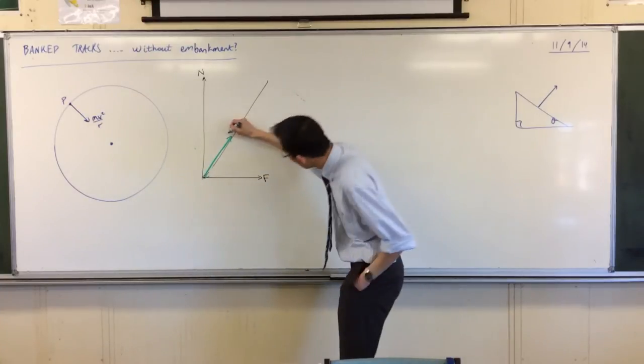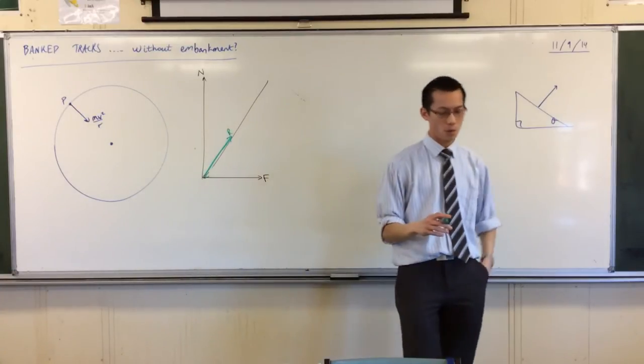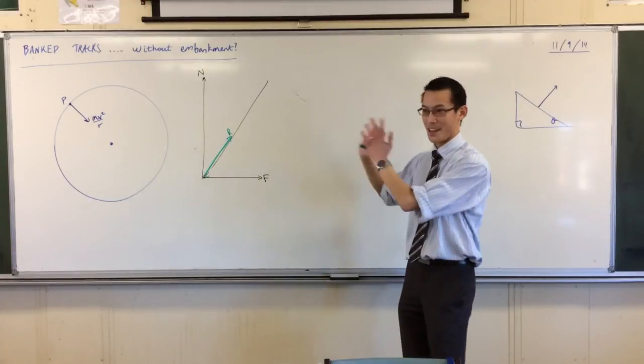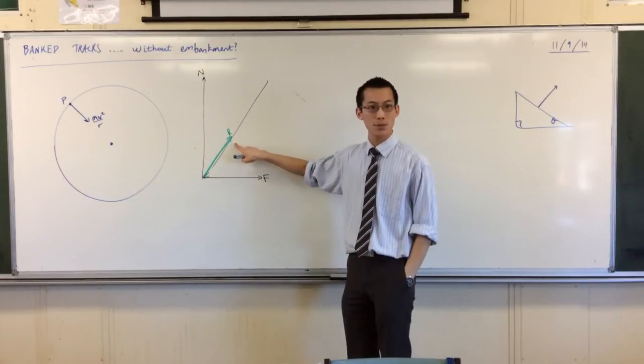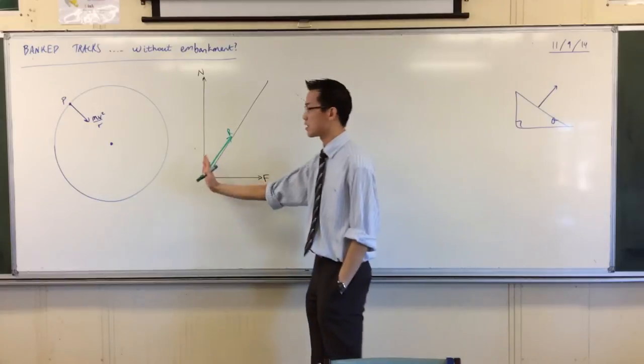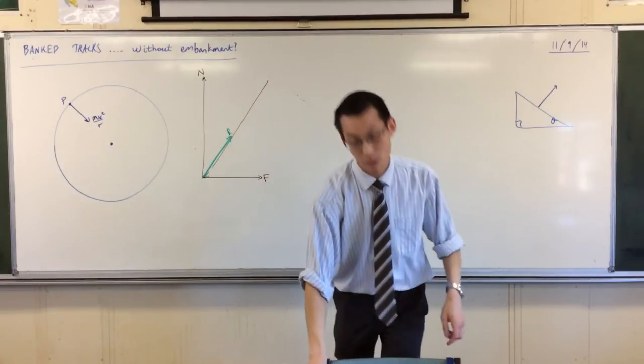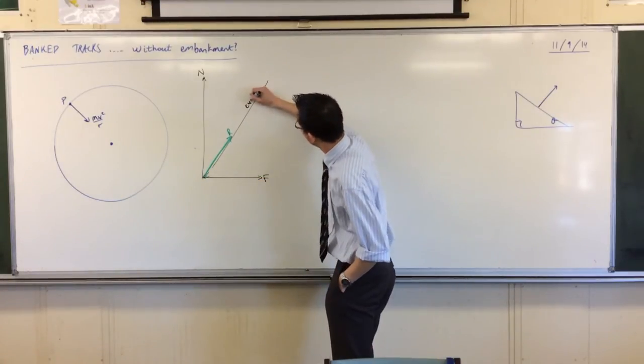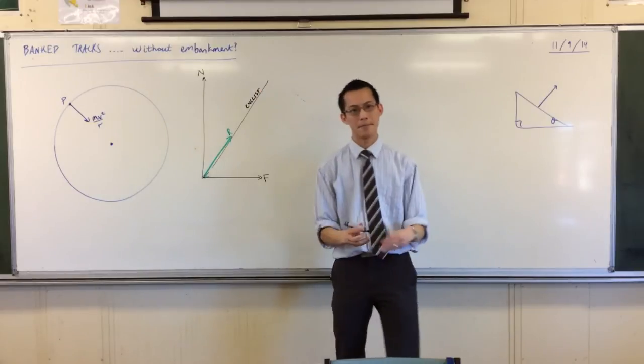Because if it's not, for instance, suppose he banked so far over that the resultant force was not this way, but say over this way. What would happen to the cyclist? He'd fall over, because his body is this way, force is acting this way, and down he goes. So what we want is for these angles to match up exactly so that the resultant force lines up exactly with the cyclist, like so.